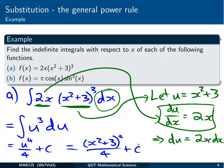And that kind of makes sense. You can go back and check that. So if we were going to differentiate this, we want to end up with 2x times x squared plus 3 to the 3. c would differentiate away to 0.